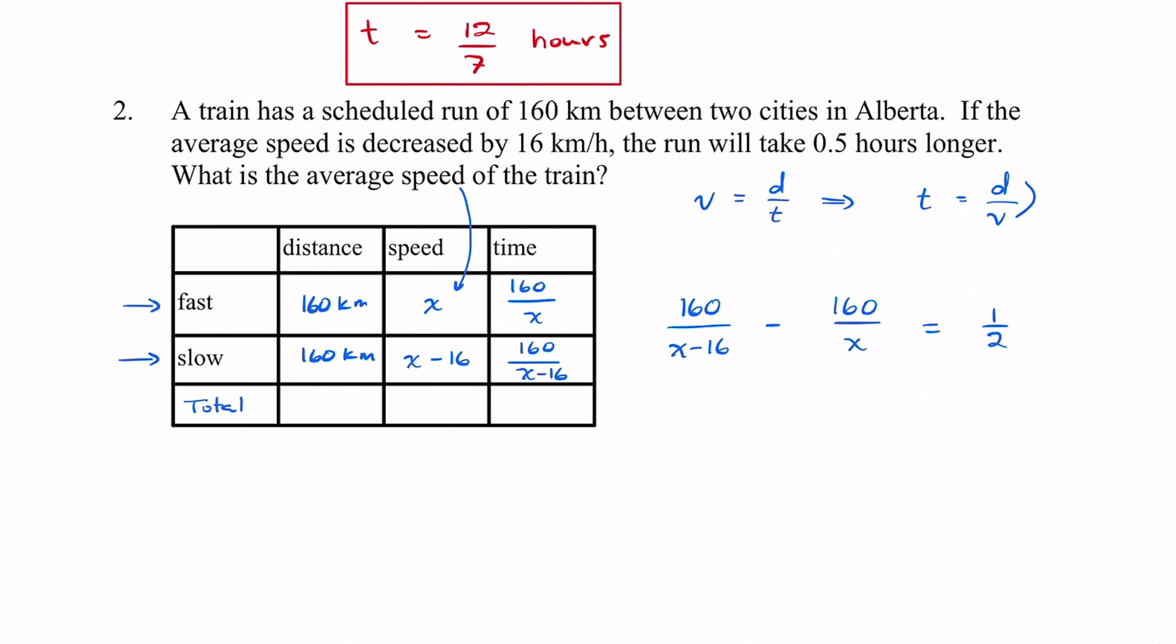We got all of our fractions and then we're going to try to remove all of our denominators. I can see each of the factors. We got an x minus 16, an x, and a 2. So I'm going to multiply everything by those three terms.